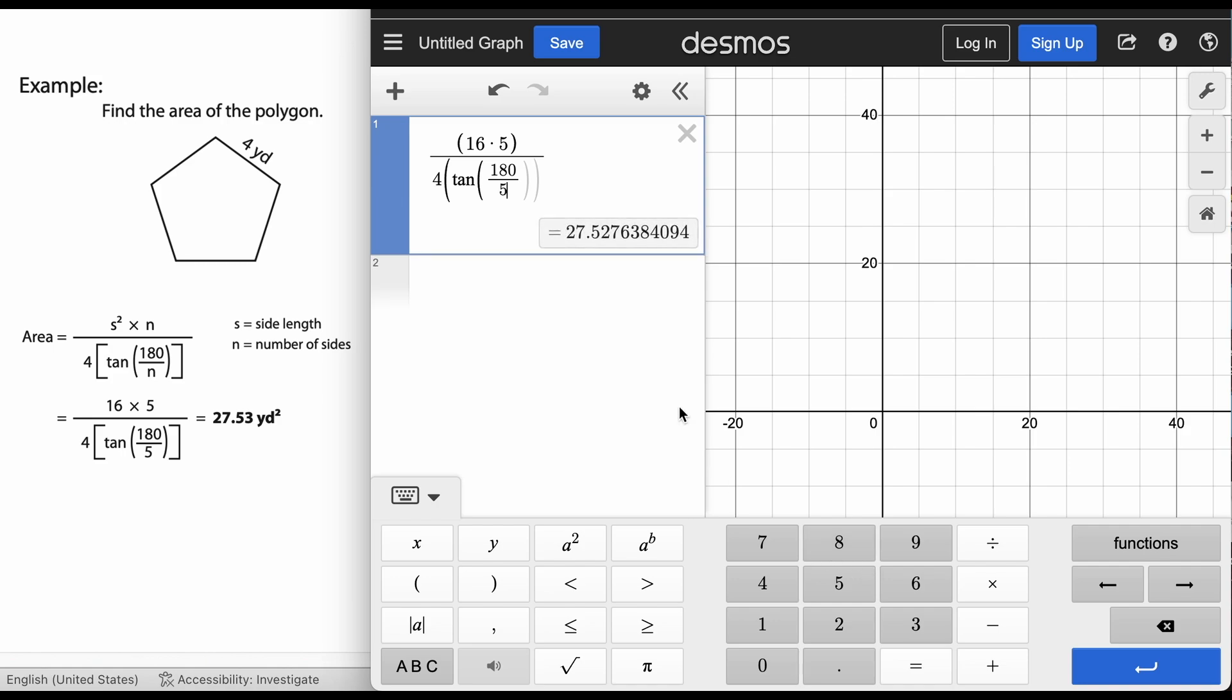Now as you can see right there these two parentheses are grayed out. I don't even need to finish them. Desmos automatically has already calculated that answer 27.527. If we rounded to the nearest hundredths that would be 0.53.